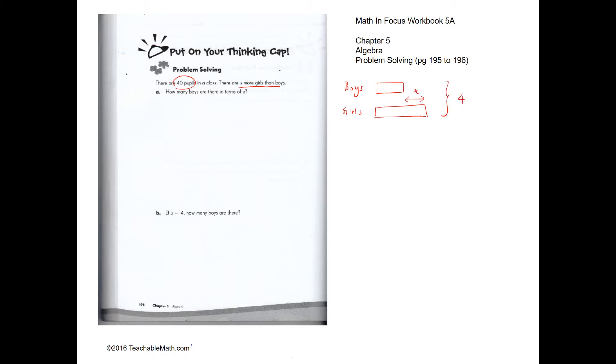And together, we have 40 pupils. So over here, we can draw our boxes. So this is a unit. And this is another unit. So we can see in our math, so two units will be equal to 40 minus x. And the number of boys is actually just one unit. So one unit is equal to 40 minus x divided by 2. So the number of boys would be 40 minus x divided by 2 because the number of boys is just one unit.